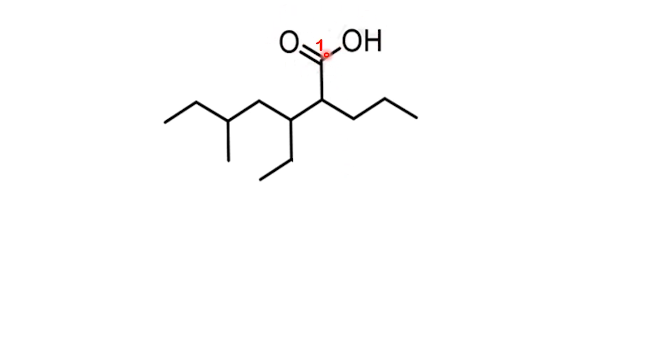From there, we look for the longest continuous chain that includes this carbon. Tracing carefully, we find 7 carbons, so the parent name is heptane.